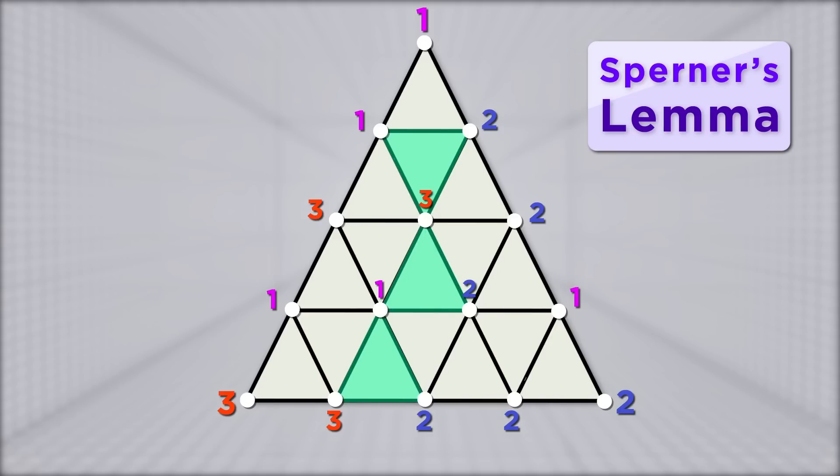It'll be labeled 1, 2, 3. Why will a fully labeled triangle always exist? In other words, how do we prove Sperner's Lemma?